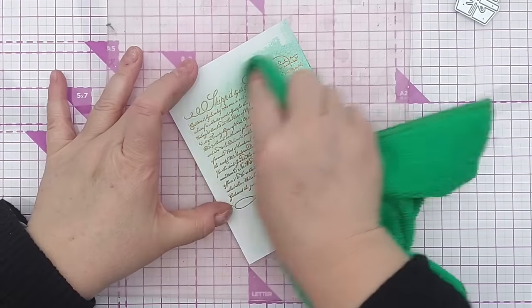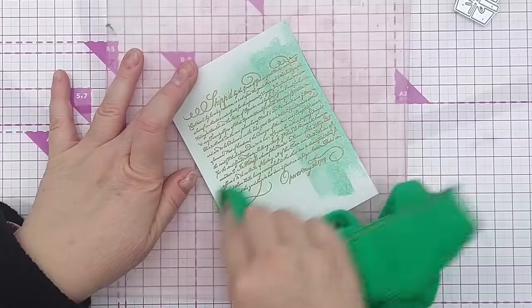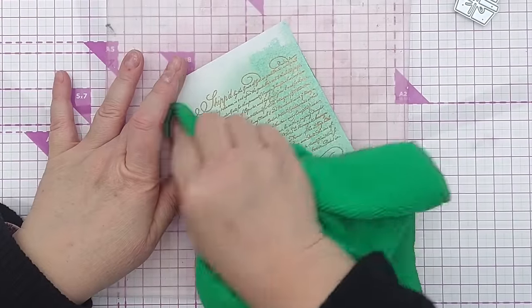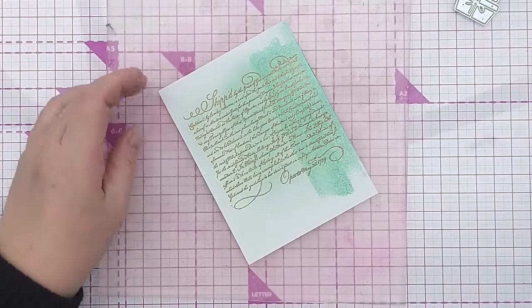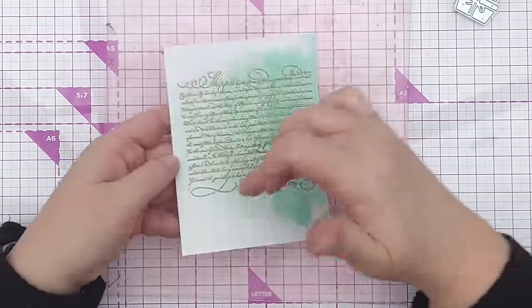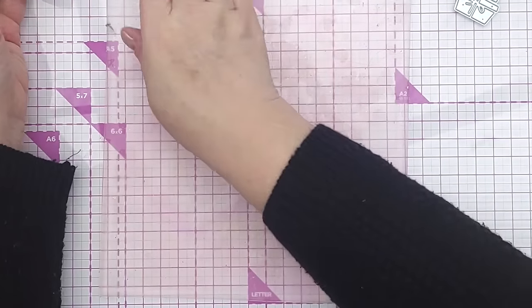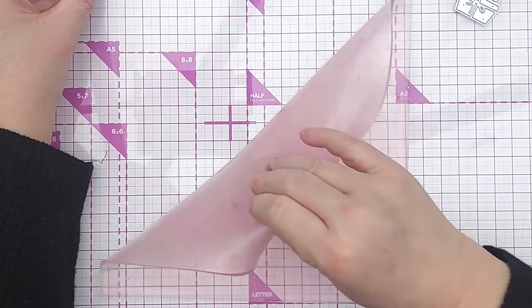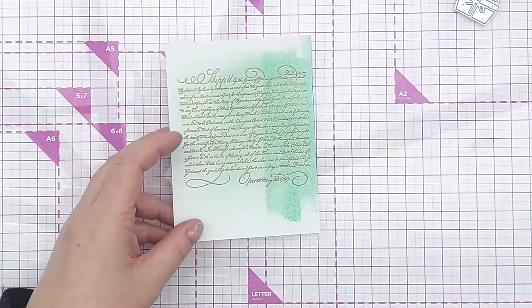Then I'm going to buff this so that the gold hasn't got any ink left on top. There we go. So this is a bit blotchy but it will kind of smooth out and by the time I've cut my little bits from it you won't be able to see any blotchiness.